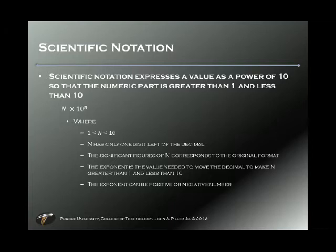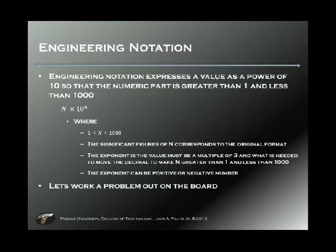Engineering notation is scientific notation except it has a few extra variables. Capital N is allowed to be somewhere between 1 and 1000, which means we can have up to three digits to the left of the decimal, and as many as needed to the right to maintain significant figures. The exponent is the number of times you move the decimal, but we have to move it in groups of three, so the exponent will always be a multiple of three.